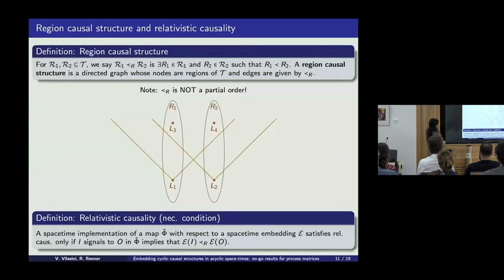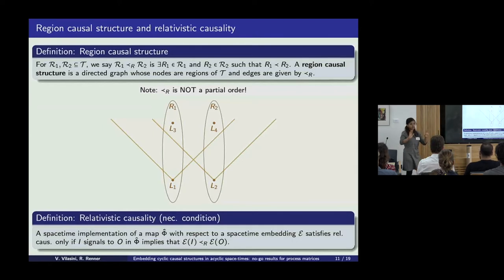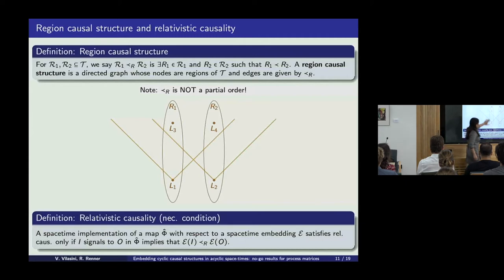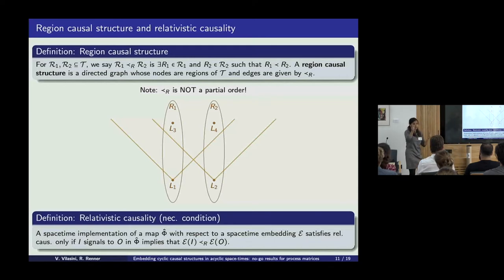A useful definition is that of the region causal structure, which follows naturally. A spacetime region is just a subset of points in this partially ordered set. We say that region R1 is ordered before region R2 if there exists at least one point in R1 and one point in R2 such that the first is in the past of the second. Notice that this is not a partial order — if you have two overlapping regions, you can have influences going in both directions between them even though the spacetime is acyclic. The region causal structure is not transitive.